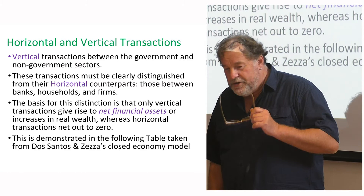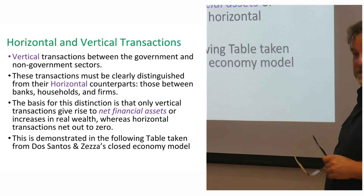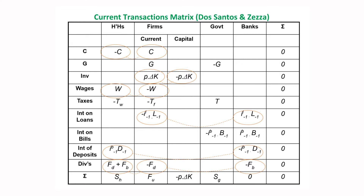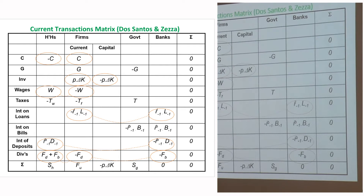The crucial thing is that only vertical transactions give rise to net financial assets or increases in real wealth, whereas horizontal transactions net out to zero. You can see this clearly when looking at a simple transactions table in the closed economy model — here is a transactions matrix from Dos Santos and Zezza, who are modellers at the Levy Institute.